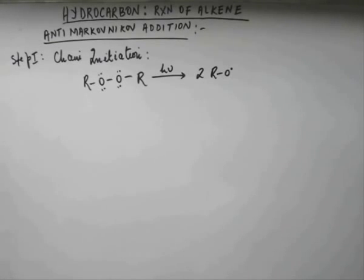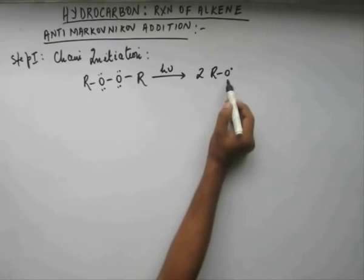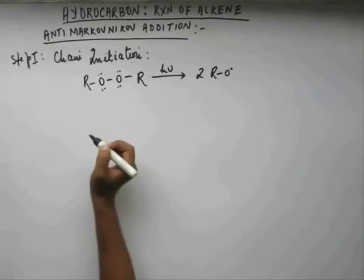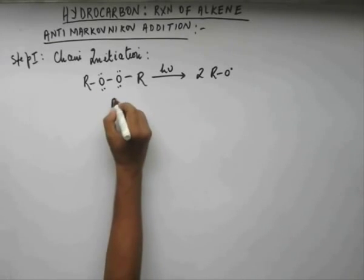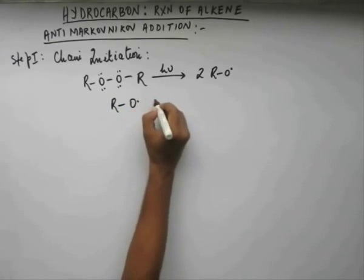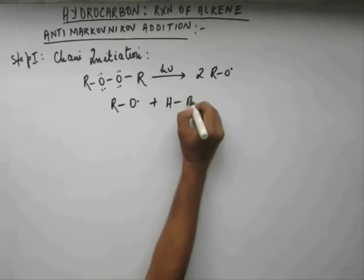Now oxygen being second most electronegative element, the deficiency of electron on oxygen is not stable. This O dot is having deficiency of one electron because this oxygen is having seven electrons in its outermost shell. So what happens is this RO dot goes for reaction to complete its octet.